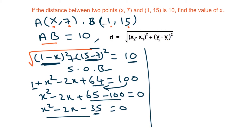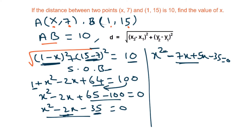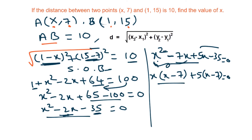We need factors of 35 that give a difference of 2: 7 times 5 is 35, and 7 minus 5 is 2. So we write x square minus 7x plus 5x minus 35 equals 0. We split minus 2x as minus 7x plus 5x. Taking x common from the first two terms gives x(x minus 7), and taking 5 common from the last two gives 5(x minus 7). So (x minus 7)(x plus 5) = 0.